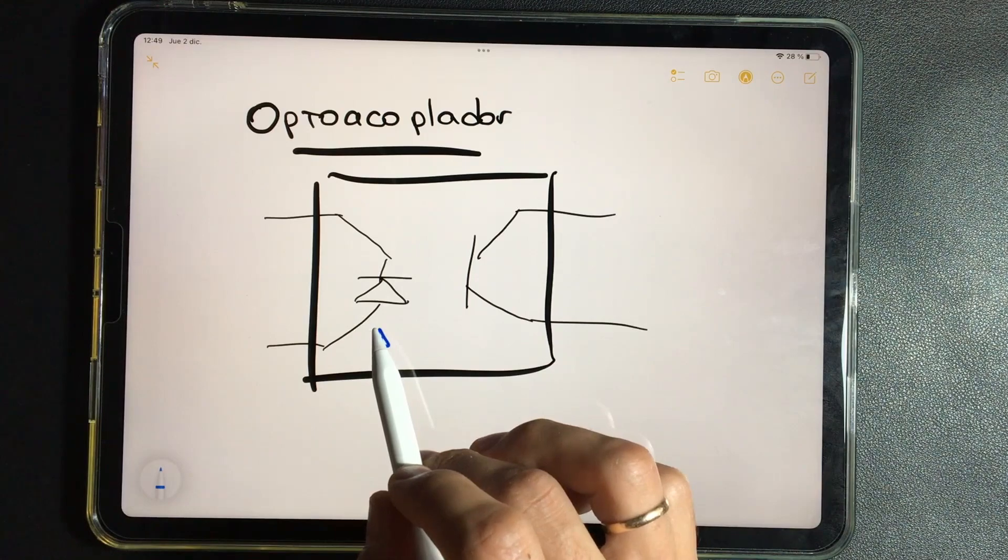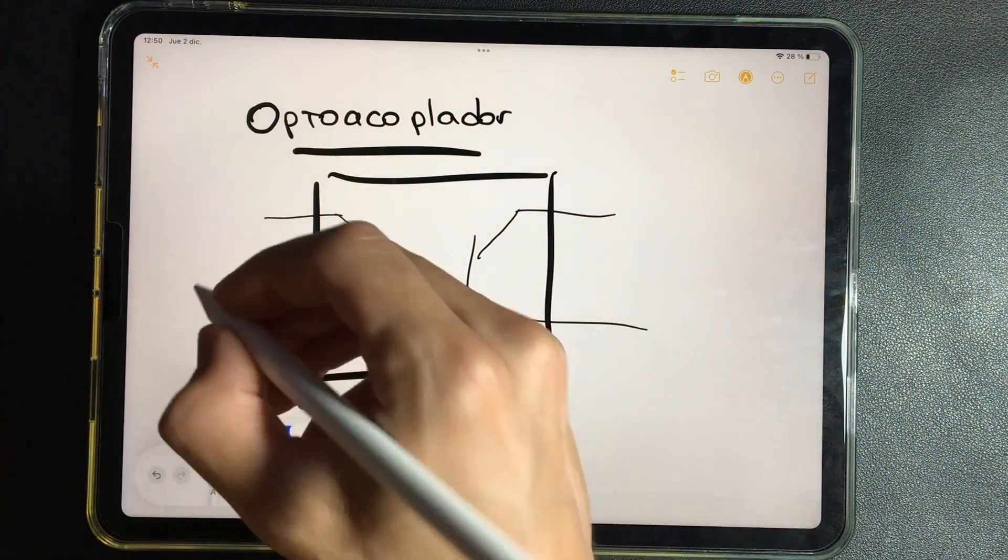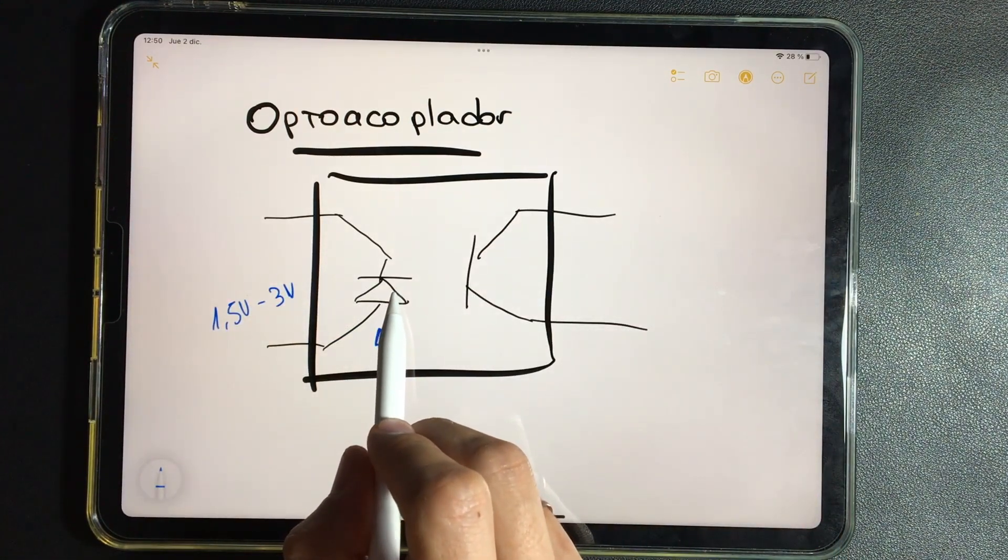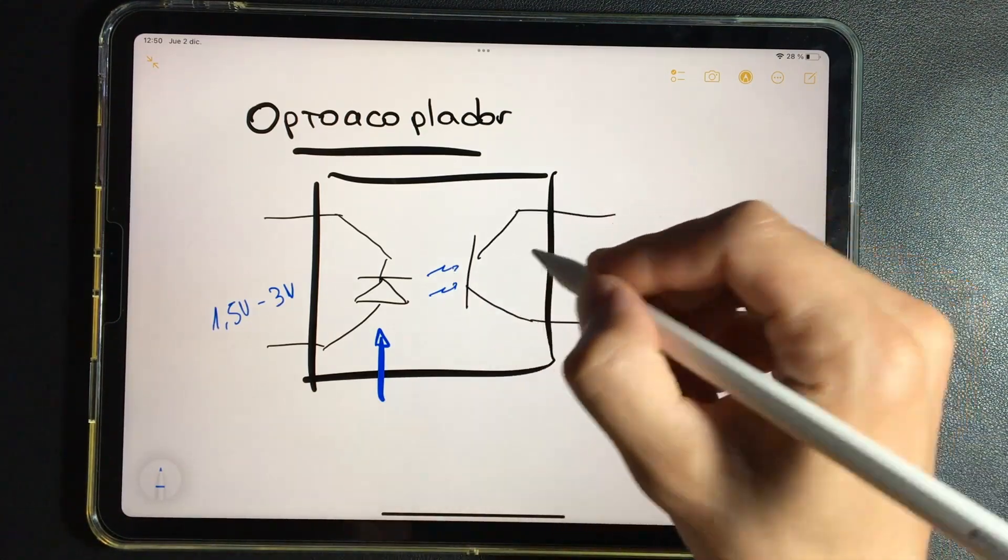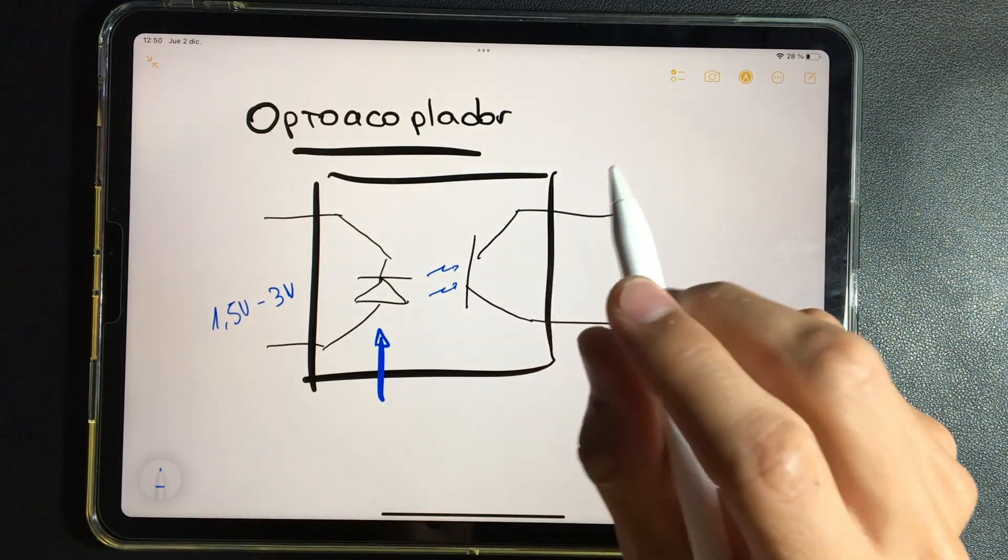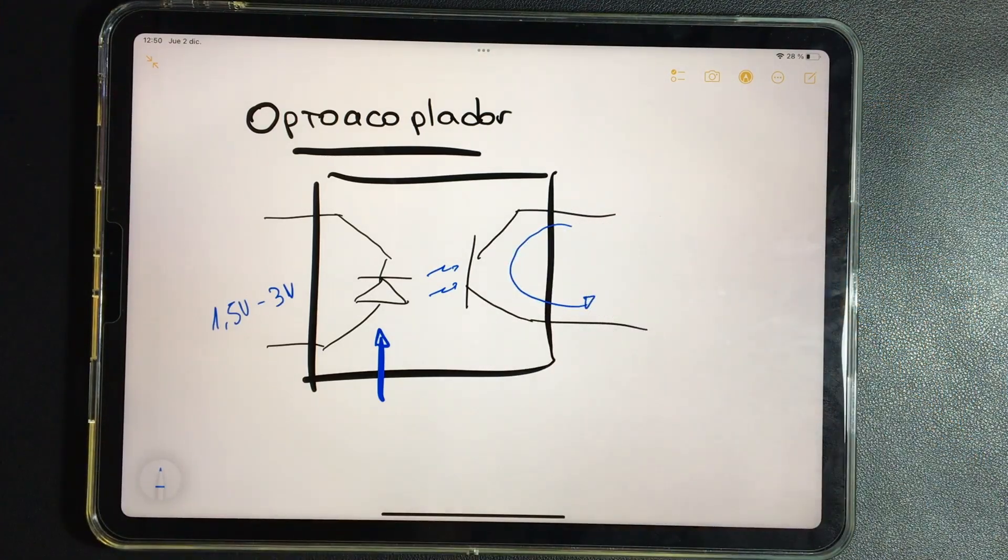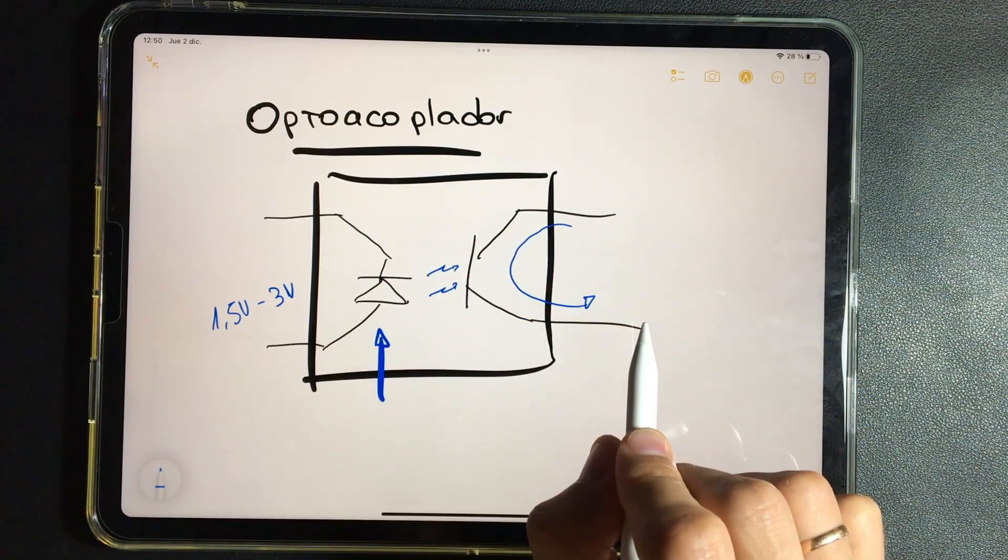When we excite this diode, we inject a voltage of approximately 1.5 to 3 volts. At this moment this LED turns on, emits light. And from this side, where we have a photosensitive circuit, it then activates and lets the electrons pass. I turn on this light, and from this side it lets the electrons pass.